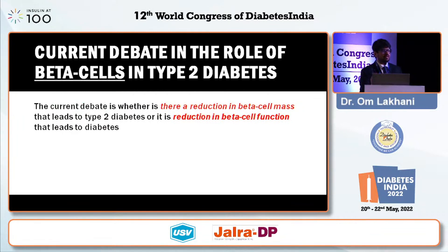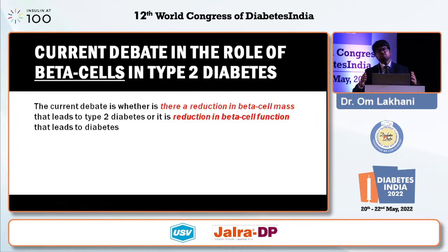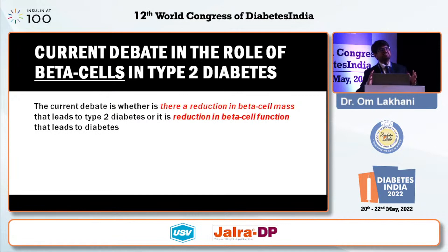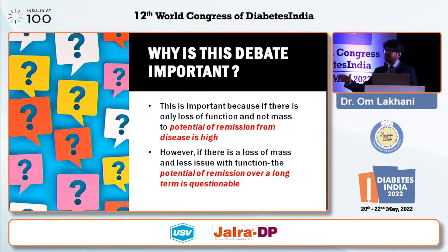In today's world, we are talking about diabetes remission. When we say beta cell mass is reduced, that means it is somewhat permanent — if cells die, they are generally not going to be resurrected. But if a beta cell stops functioning as well as it should, perhaps you can stimulate it and it will start functioning better. So when talking about the potential for diabetes remission, it is better to believe that beta cell function is the cause of diabetes rather than mass. If beta cell function can be restored, perhaps you can improve outcomes in diabetic patients. This is why recent trials like the DiRECT trial are so important.